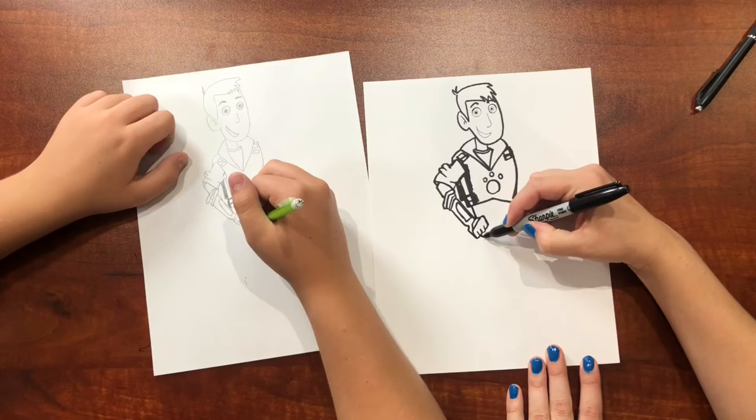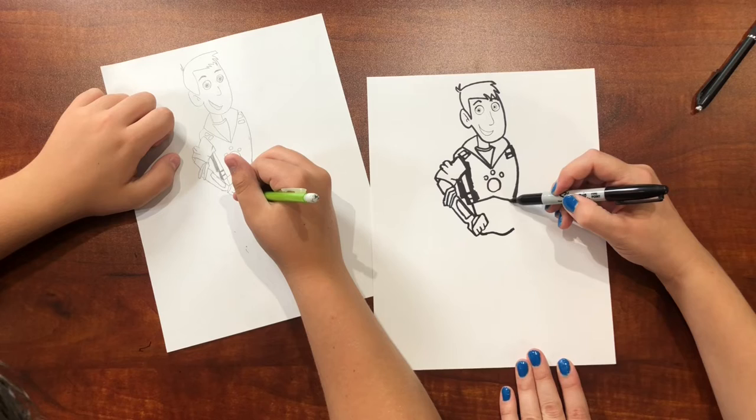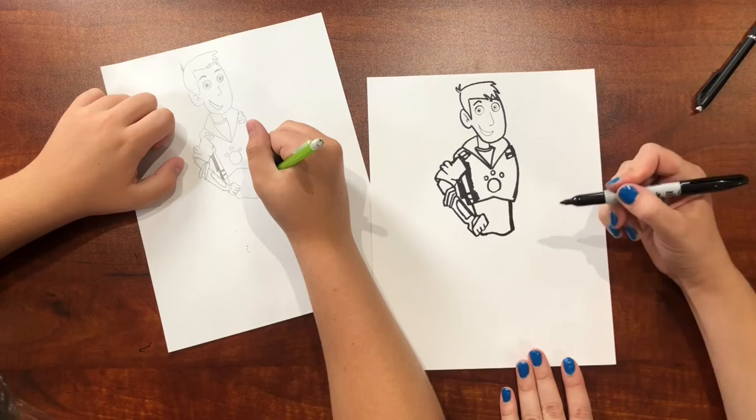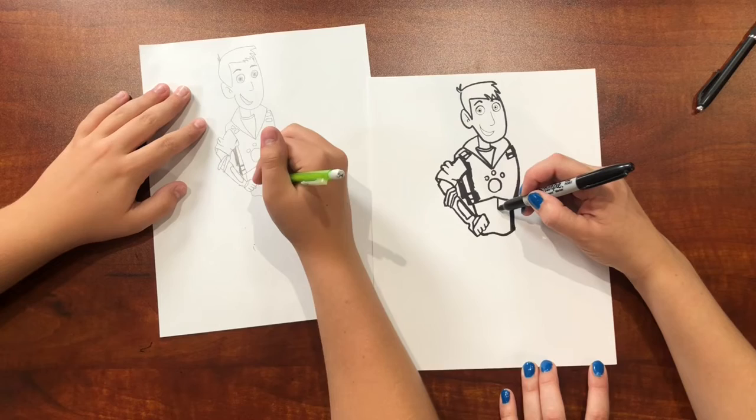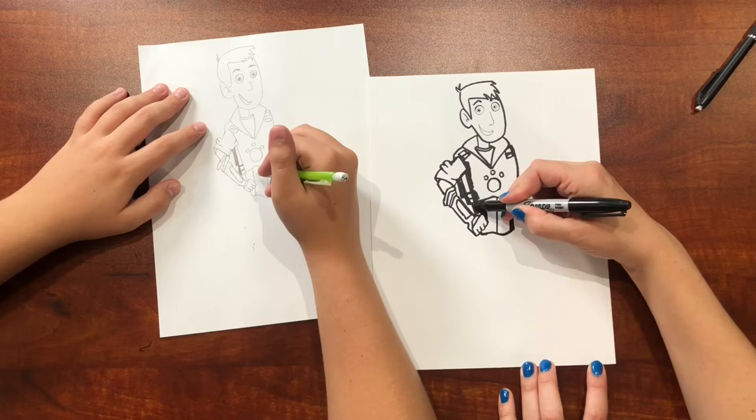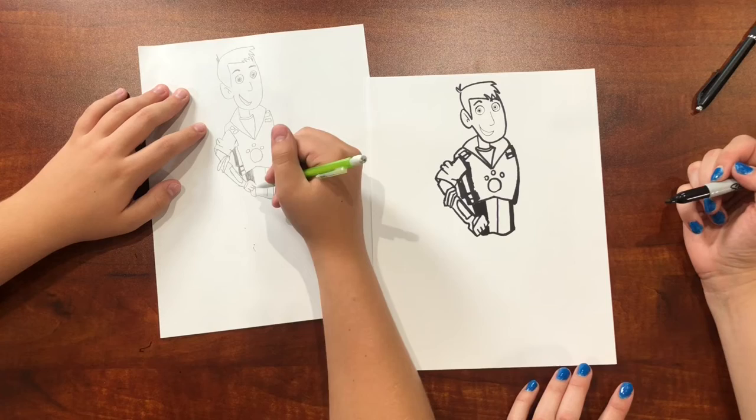So his shirt comes down from like where those blue stripes are. And then it comes over, sweeps down a little bit and back up. And it comes up right here before the vest ends. There's a line down the center right here and then this is dark right here too.